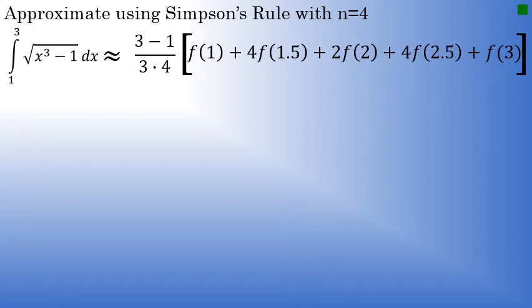At this point, I'll say the hard work is done, and now we'll grab our calculator and evaluate the expression. First, 3 minus 1 over 3 times 4. 3 minus 1 is 2. 3 times 4 is 12.